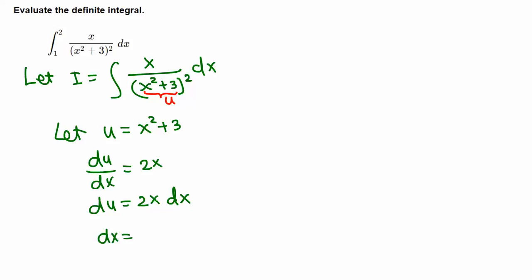With these substitutions, the indefinite integral becomes: x over u squared, and dx is du over 2x. The x on the top and bottom cancel.